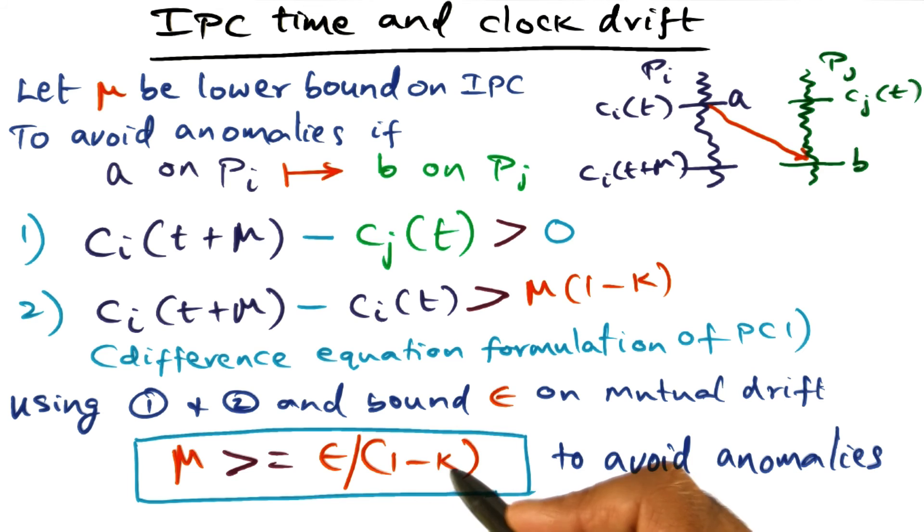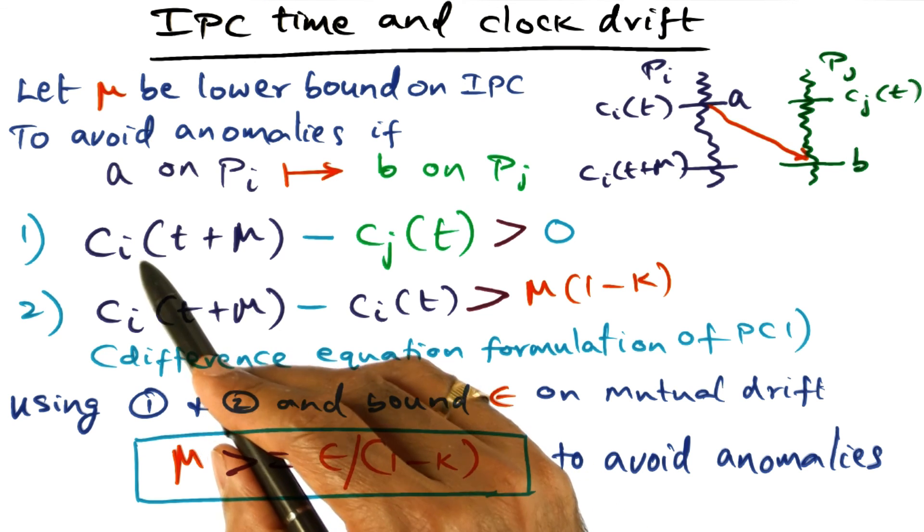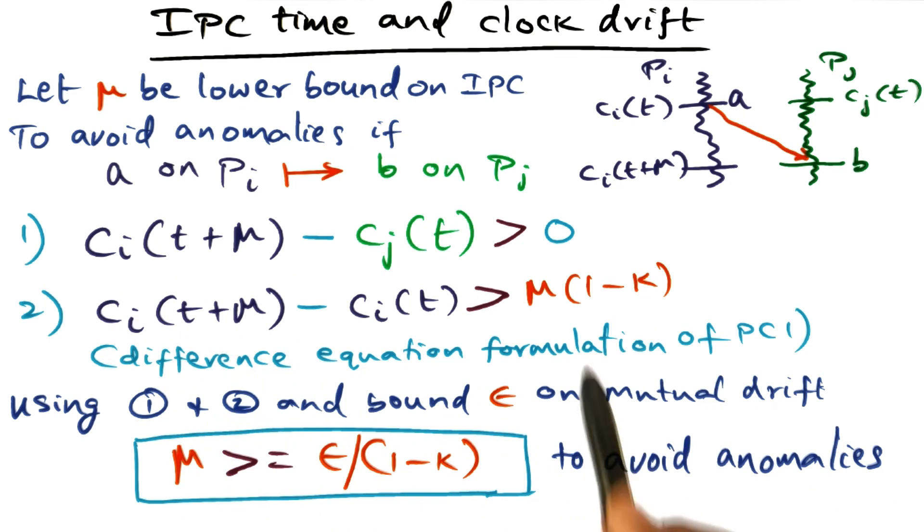So informally, what you expect is k is very, very small, which means that the denominator is very close to one. So all that we are saying here is that the mutual clock drift, which is represented by epsilon, is very small compared to the inter-process communication time, which is what is captured by this condition that I laid out here.